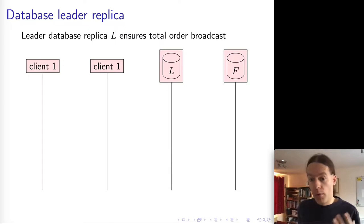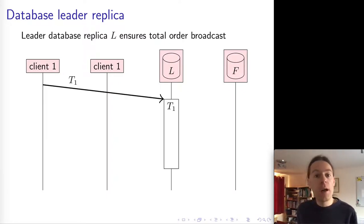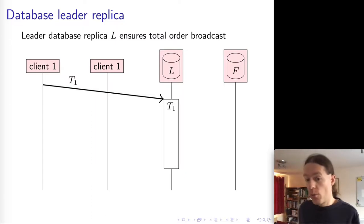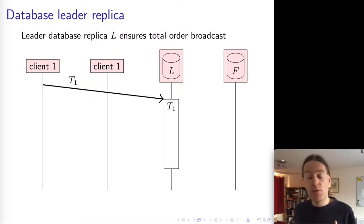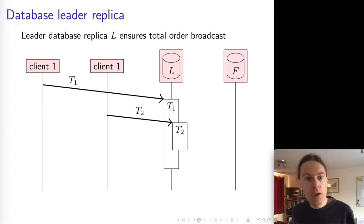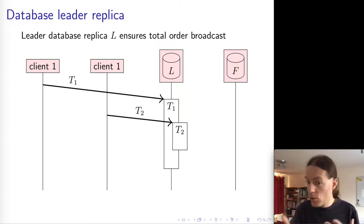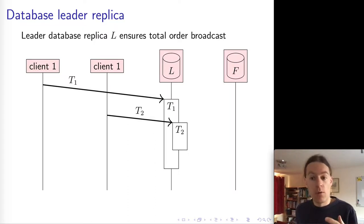Another example of how Total Order Broadcast is used for replication is passive replication for databases. Here, you have a leader database and one or more follower databases. One way to implement Total Order Broadcast is by designating one node as the leader, which decides on an order for messages, and all other nodes deliver messages in that order. In database replication, clients request the leader to execute transactions, and those transactions may execute concurrently on the leader. Only the leader can execute read-write transactions that modify the database state.